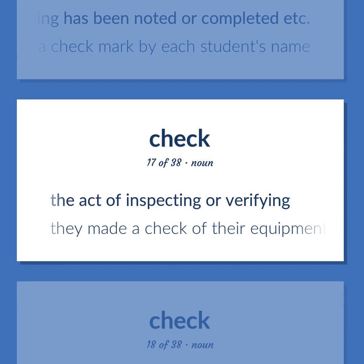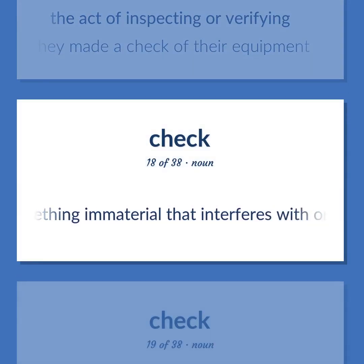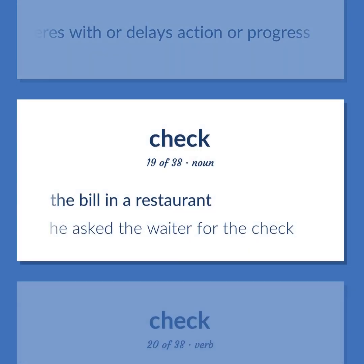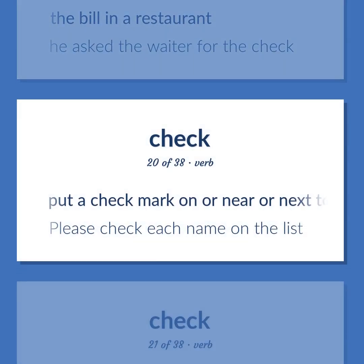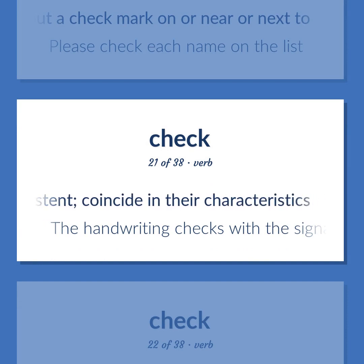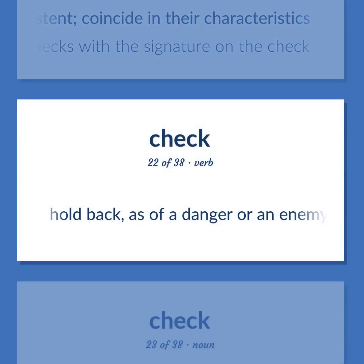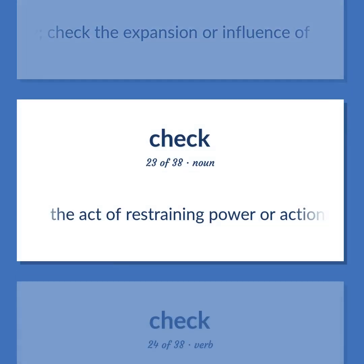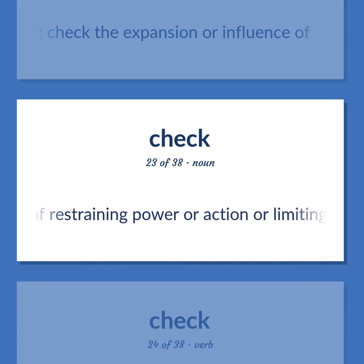Check: the act of inspecting or verifying — 'They made a check of their equipment.' Something immaterial that interferes with or delays action or progress. The bill in a restaurant — 'He asked the waiter for the check.' Put a check mark on or near or next to — 'Please check each name on the list.' Be compatible, similar, or consistent; coincide in their characteristics — 'The handwriting checks with the signature on the check.' Hold back, as of a danger or an enemy; check the expansion or influence of. The act of restraining power or action or limiting excess.